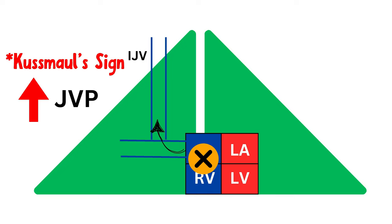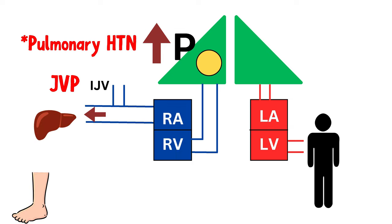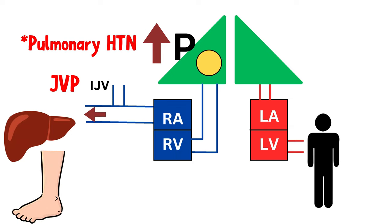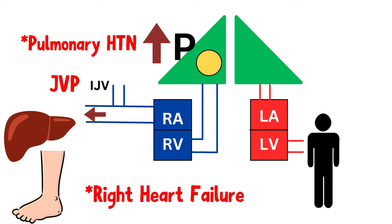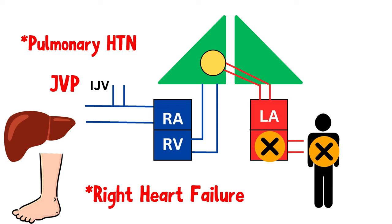From the jugular vein, blood can back up further into the venous system, causing hepatomegaly and edema of the extremities — we call this right heart failure. The massive blood clot can also significantly impair blood flow to your heart. Less blood flow to the heart means less circulating volume, so this can lead to hypotension.